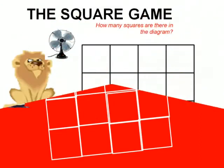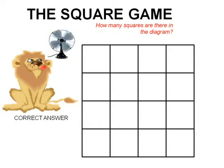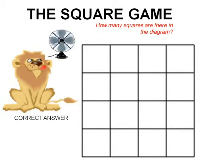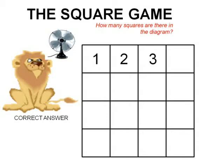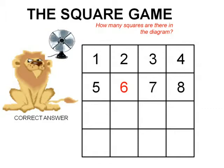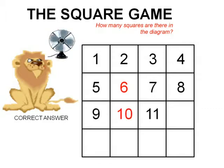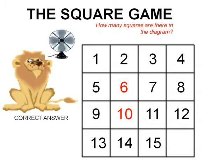Observing the diagram, the lion said with confidence: 'It is very easy to give the right answer.' He counted: 1, 2, 3, 4, 5, 6, 7, 8, 9, 10, 11, 12, 13, 14, 15, and 16. So the lion's answer was 16 squares.